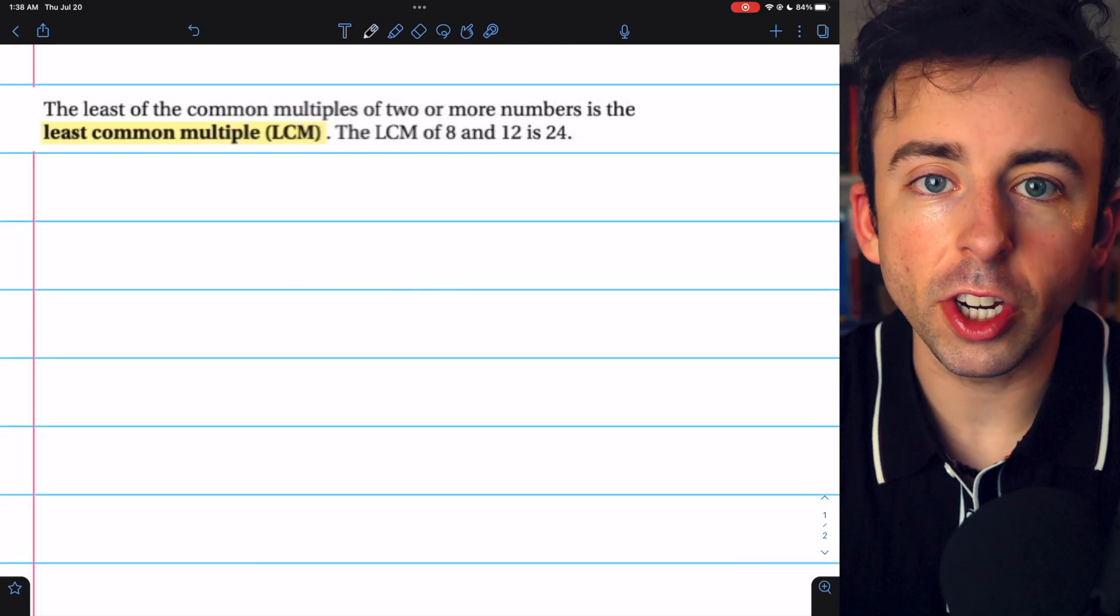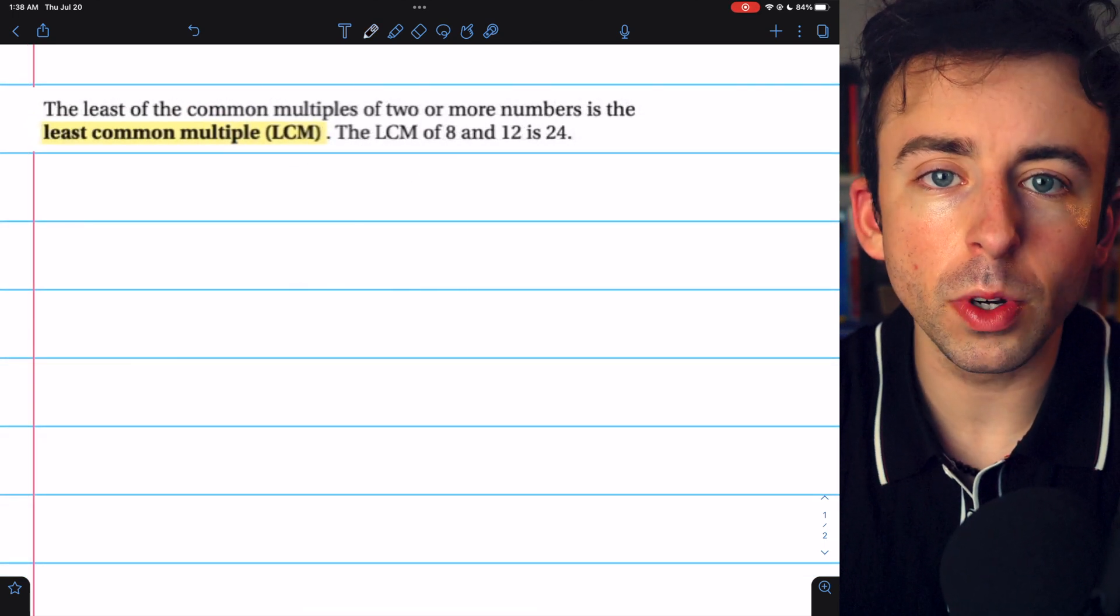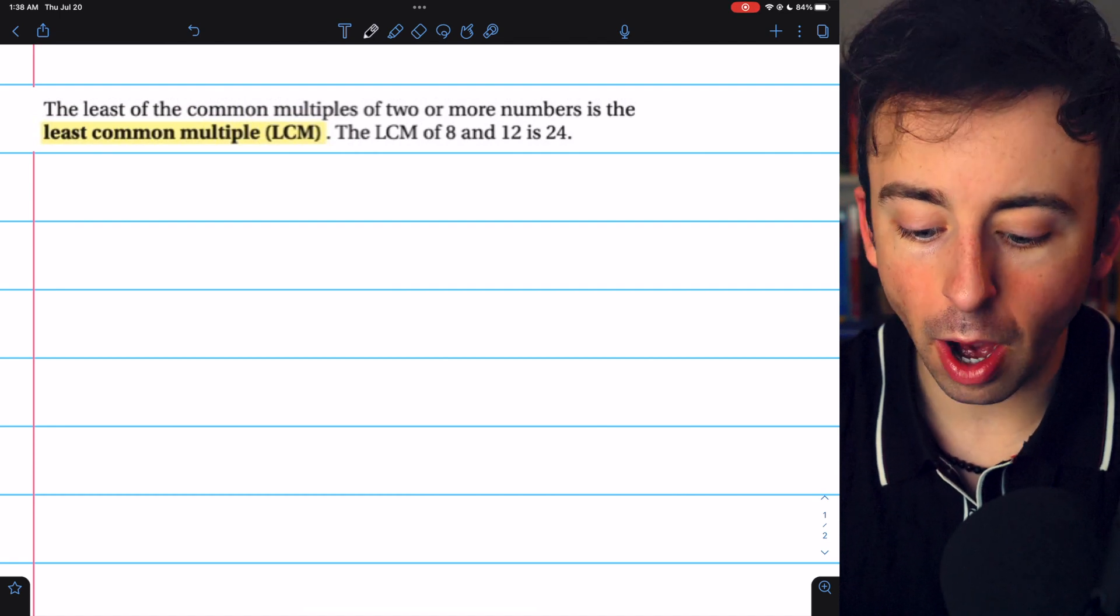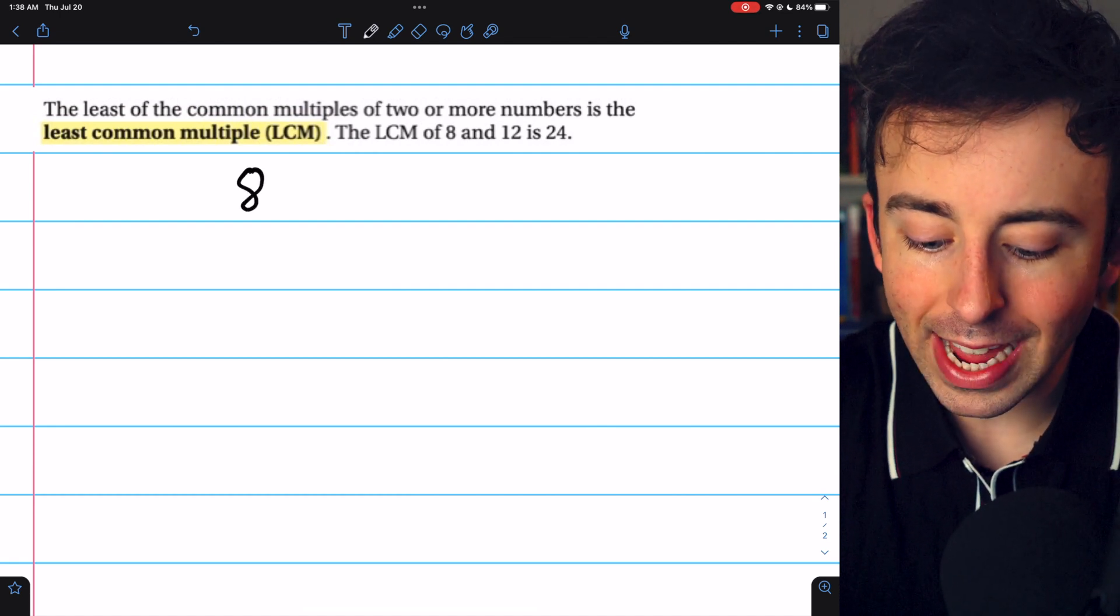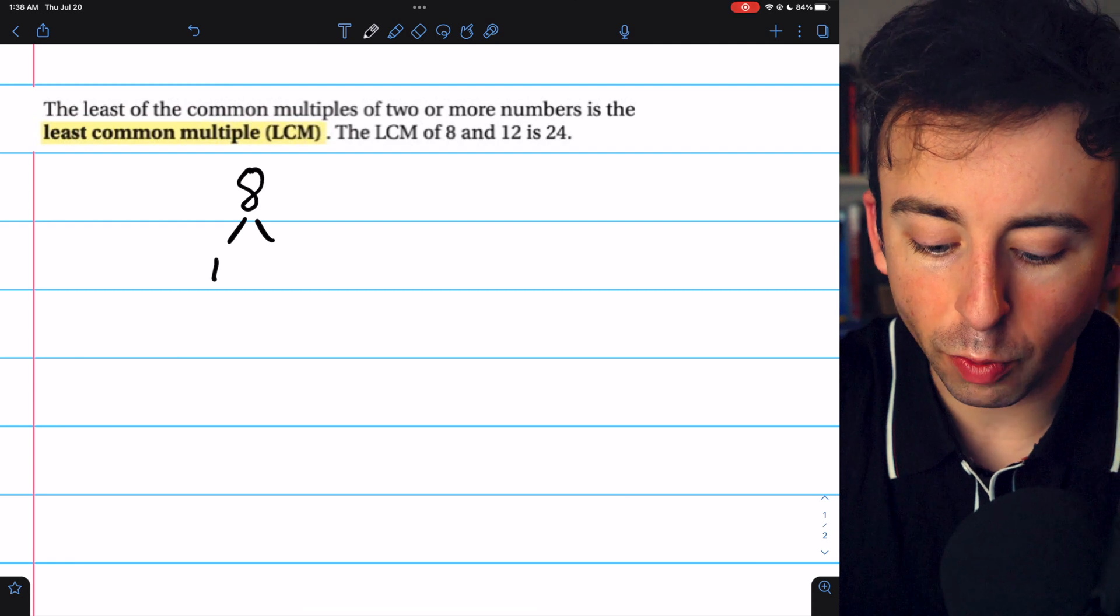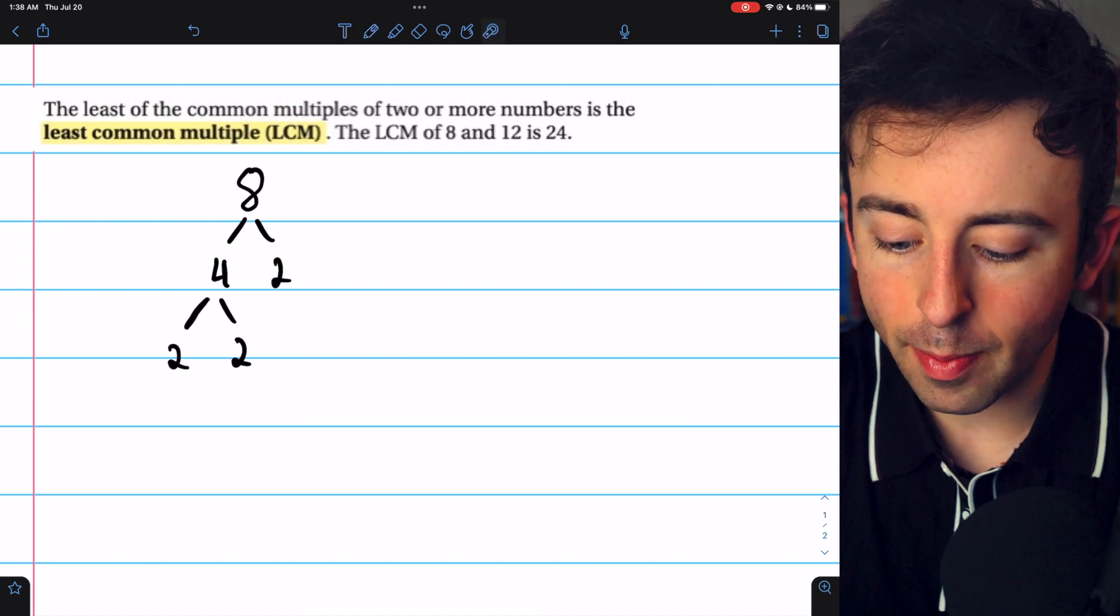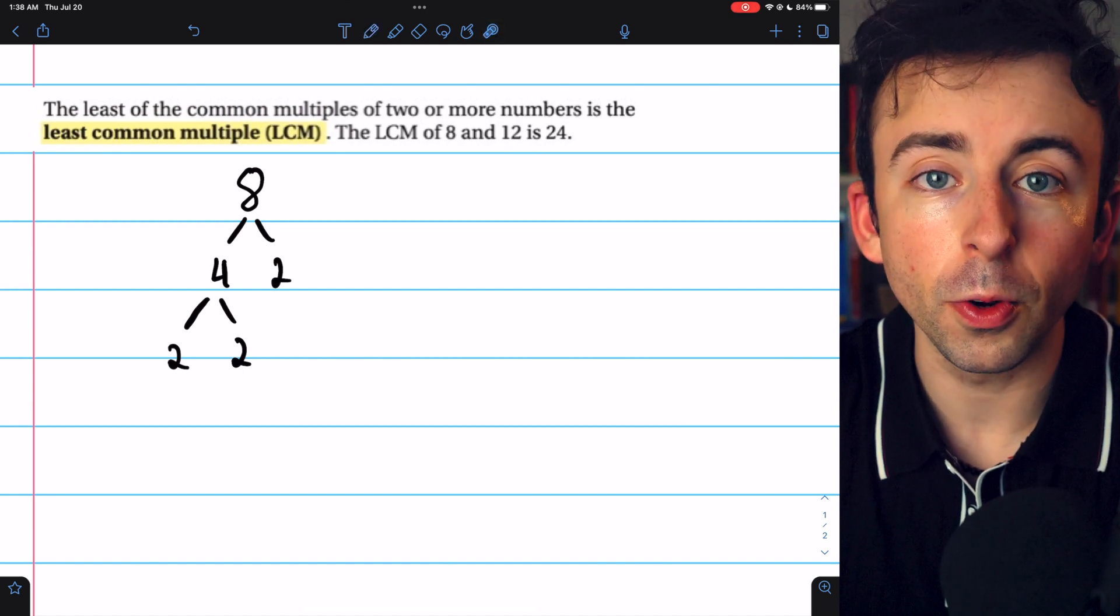Another reliable strategy to find the least common multiple of two numbers is to look at their factors, specifically their prime factors. We can break 8 down into 4 times 2, and 4 can be broken down into 2 times 2. And we see the prime factorization is 2 times 2 times 2.